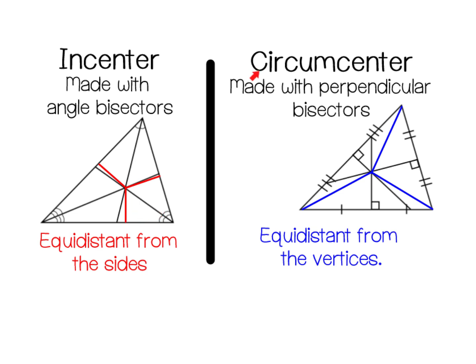With a circumcenter, the circumcenter is made with perpendicular bisectors. So we're bisecting the sides and creating a perpendicular segment. What's special about this is that the circumcenter is equidistant from the three vertices, which then allowed us to circumscribe a circle around the triangle.